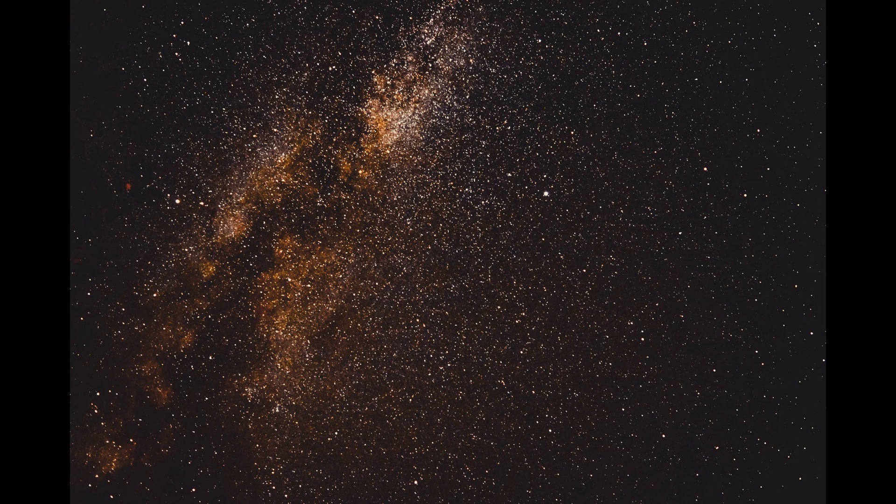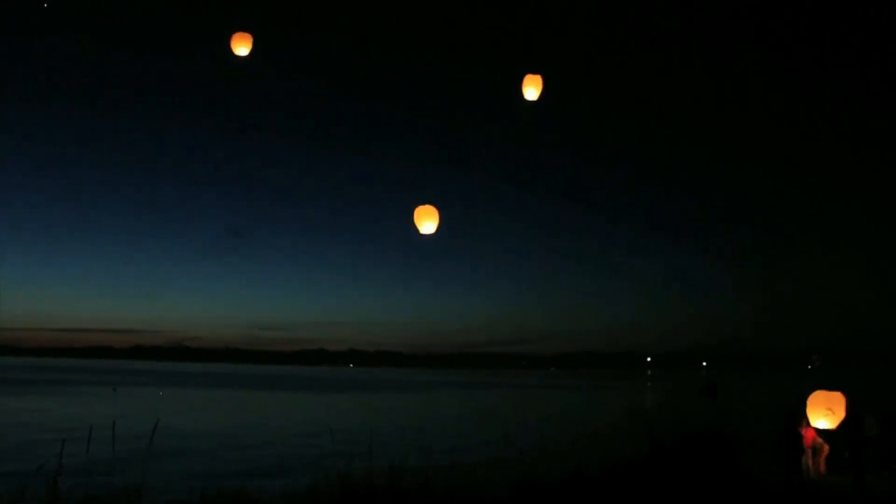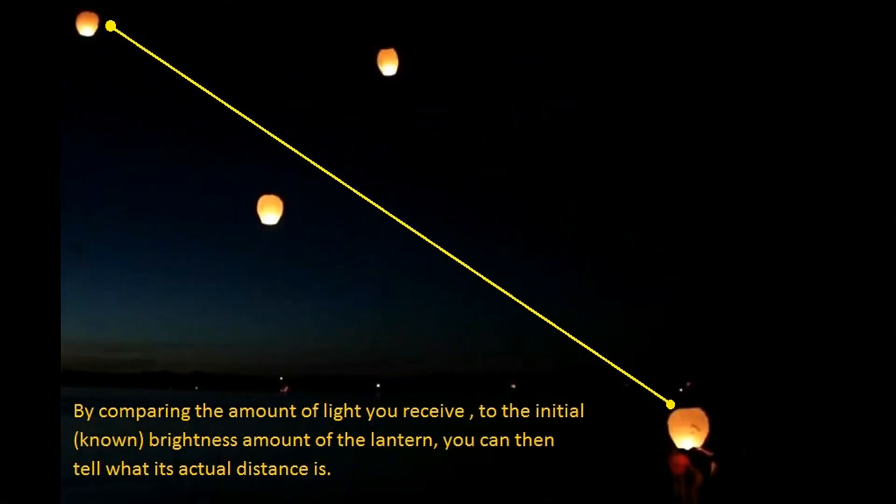There is no direct method currently that allows us to measure stars exceeding this value. To determine the distance of those more remote stars, astronomers use luminosity, or in simple terms, brightness. This method is known as standard candles — referring to objects whose luminosity is known to us. For example, if you know how bright one of those sky lanterns is, then as it flies away in the sky, you know that the amount of light you receive from the lantern will decrease by the distance squared. And so, by comparing the amount of light you receive to the initial known brightness of the lantern, you can tell what its actual distance is.